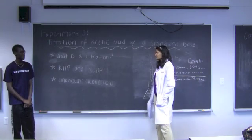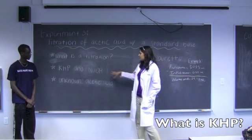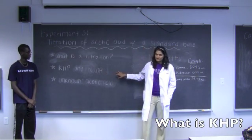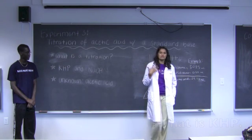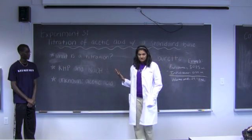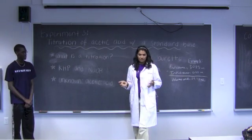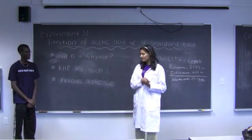The next experiment is a titration of acetic acid with a standard base. We're going to be using KHP to standardize sodium hydroxide, which means that we're going to be determining its concentration. We're doing this using titration, which is a method used to determine unknown concentrations using volumes, which is why it's also called volumetric analysis.